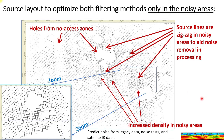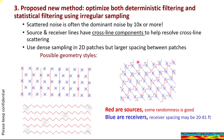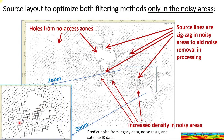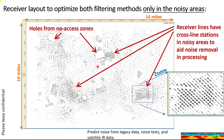For a full survey, this is what the source layout may look like. You see some acquisition holes, but focus on this box where we have some zigzag source lines. Instead of a uniform acquisition, we've only put in the zigzag source lines where it's very noisy. Some other areas where the noise isn't very strong just have linear source lines, and we also have source density varying. The receivers similarly show variable receiver density, and in the noisy box we have some cross-line receiver components.